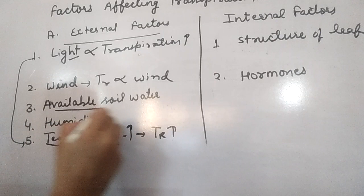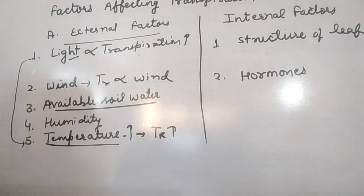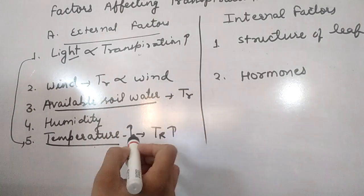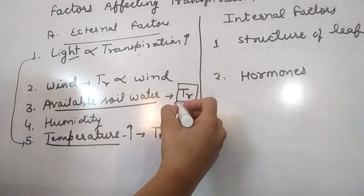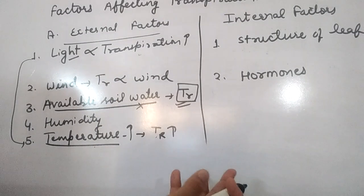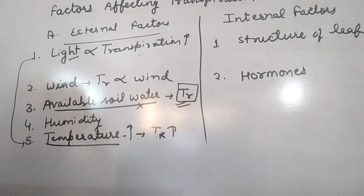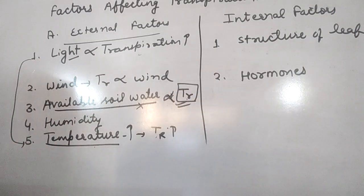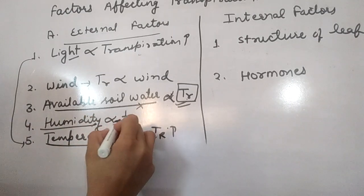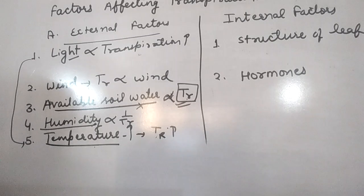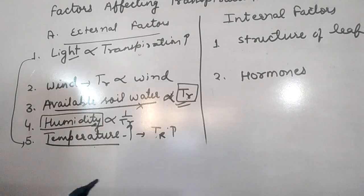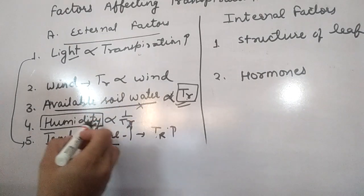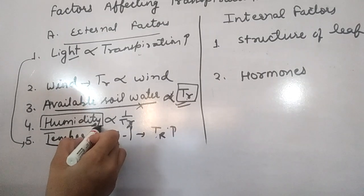Soil water: if soil water is present, the plant absorbs it and transpiration occurs. If soil water is continuously lost and the plant cannot absorb enough, the plant becomes wilted. Humidity: high humidity means the atmosphere is already moist, so the transpiration rate decreases.